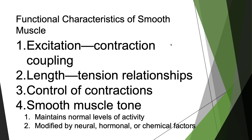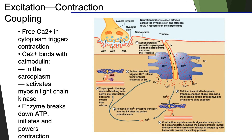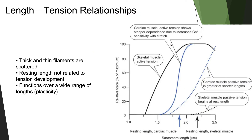Some functional characteristics of smooth muscle cells include excitation-contraction coupling, similar to skeletal muscle. The length-tension relationship differs in that thick and thin filaments are scattered and resting length is not directly related to tension development, functioning over a wide range of lengths and plasticity. The number of pivoting cross-bridges depends on the amount of overlap between thick and thin fibers, with an optimum amount of overlap to produce the greatest tension — too much or too little overlap reduces efficiency. And smooth muscle tone helps maintain normal levels of activity, modified by neural, hormonal, and chemical factors.